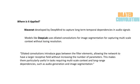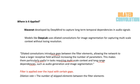Dilated convolution introduces gaps between the filter elements, allowing the network to have a larger receptive field without increasing the number of parameters. This makes them particularly useful in tasks that require multi-scale context and long-range dependencies, such as audio generation and image segmentation. A filter is applied to an input with certain gaps, where the dilation rate is equivalent to the number of elements skipped between the filter elements.